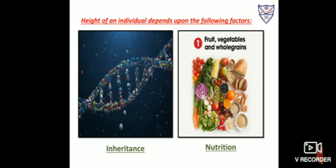Height of an individual depends on two factors: inheritance and nutrition. Height depends on the genes inherited from parents — if your parents are tall, you may also be tall, and if they are short, you may also be short. Genes control the transfer of hereditary characteristics from parents to their offspring. It is also very important to eat the right kind of food during growing years. Food rich in protein and vitamins helps bones, muscles, and other body parts get adequate nourishment for growth, so it is necessary for adolescents to have a balanced diet.